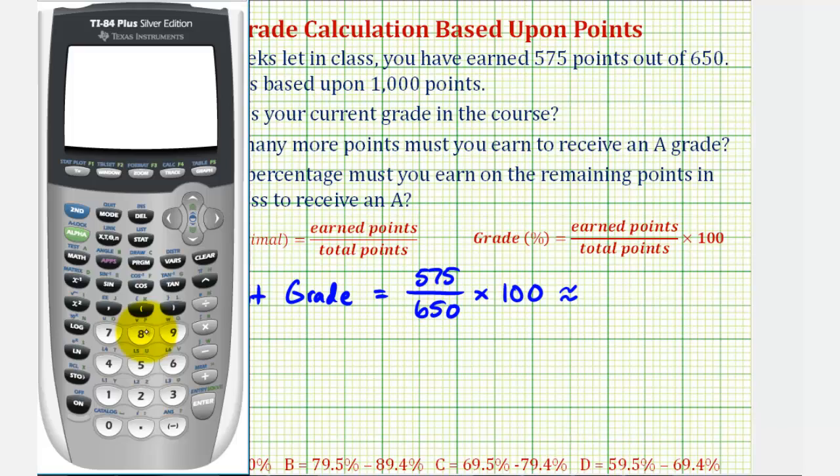So now we'll go to the calculator. We have 575 divided by 650. This is the grade as a decimal. Now we'll multiply by 100. Notice how this is equivalent to moving a decimal point to the right two places. So the current grade is approximately 88.46, or 88.46%.